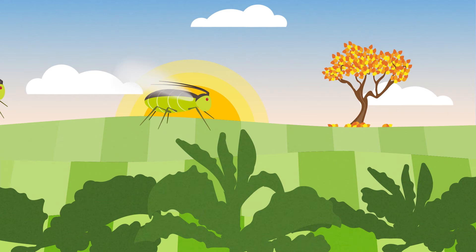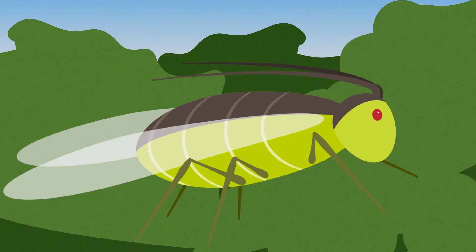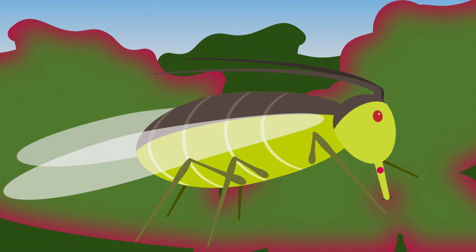In autumn, shortly after the rapeseed has emerged, virus-carrying aphids colonise the rapeseed plants and transmit the disease.